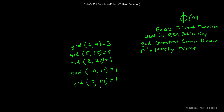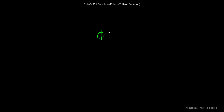Now with that out of the way, let me show you Euler's phi function. If I say take the phi of the number six, what you do is write down all the integers from one to six: one, two, three, four, five, six. Then you ask yourself: of these numbers, how many are relatively prime to six — that is, how many have a GCD of one with six?